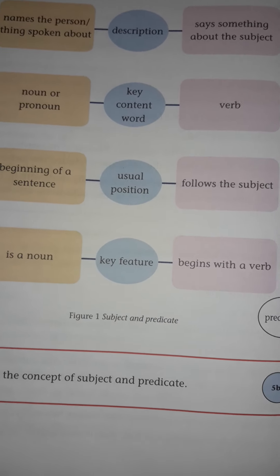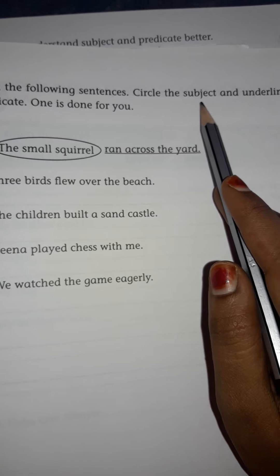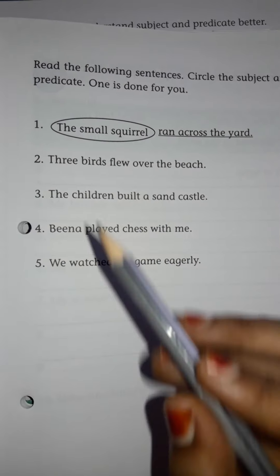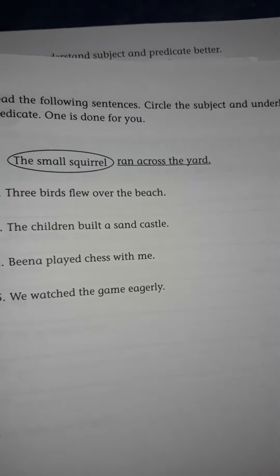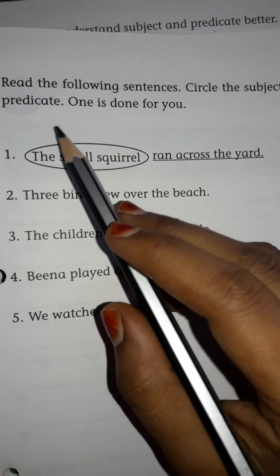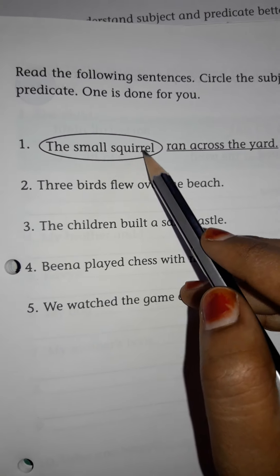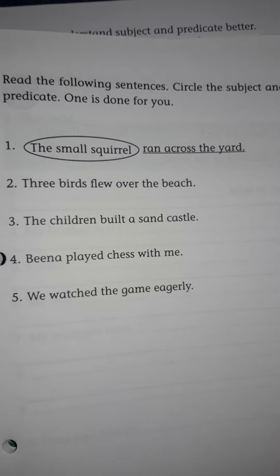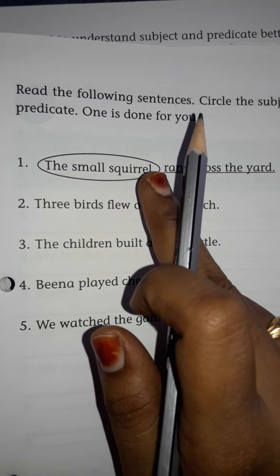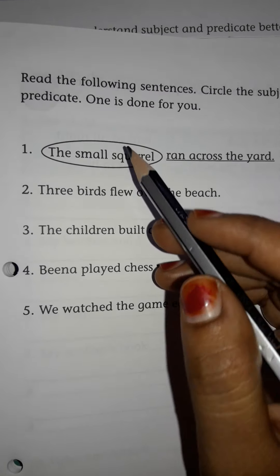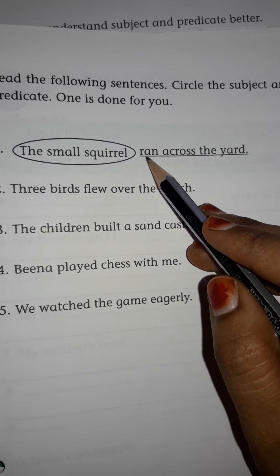Now see in the companion workbook. We have already completed 5a. Now see 5b, page number 33. You have to read the following sentences, circle the subject, and underline the predicate. One is already done for you: 'The small squirrel ran across the yard.' Who ran across the yard? The small squirrel — that is the subject.